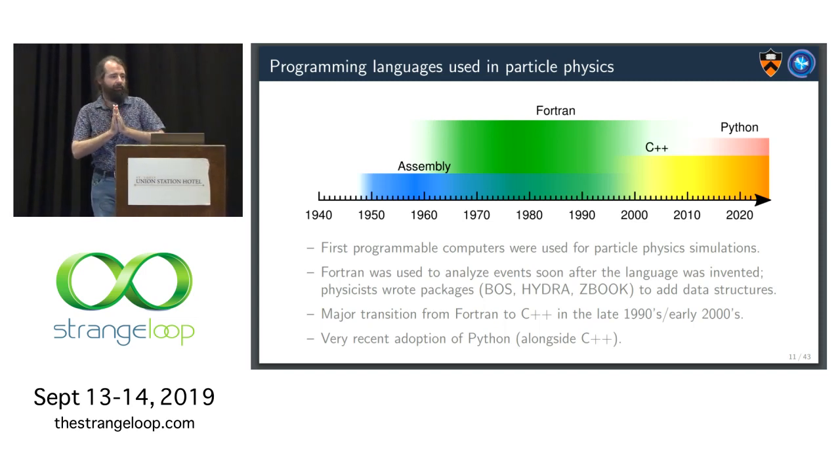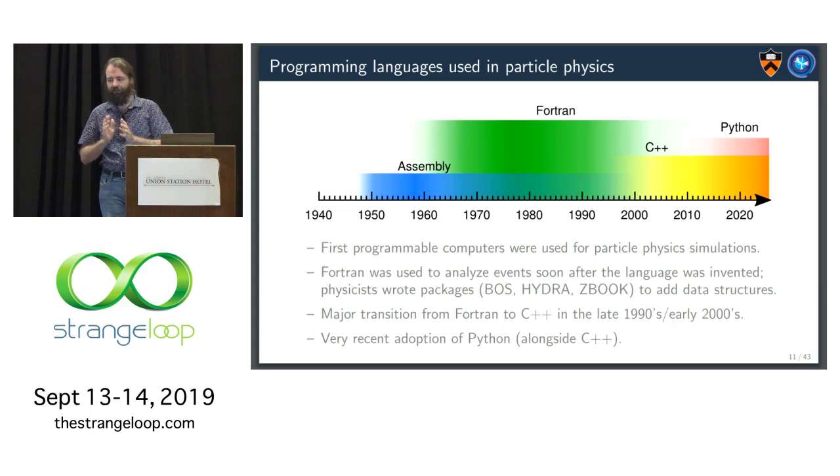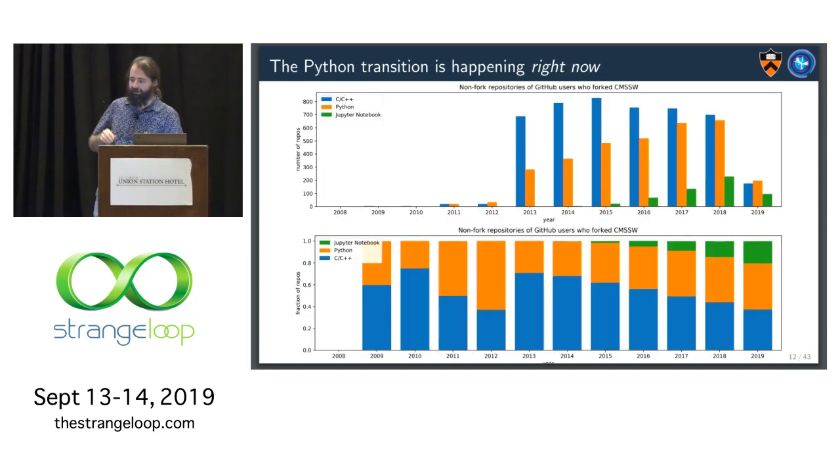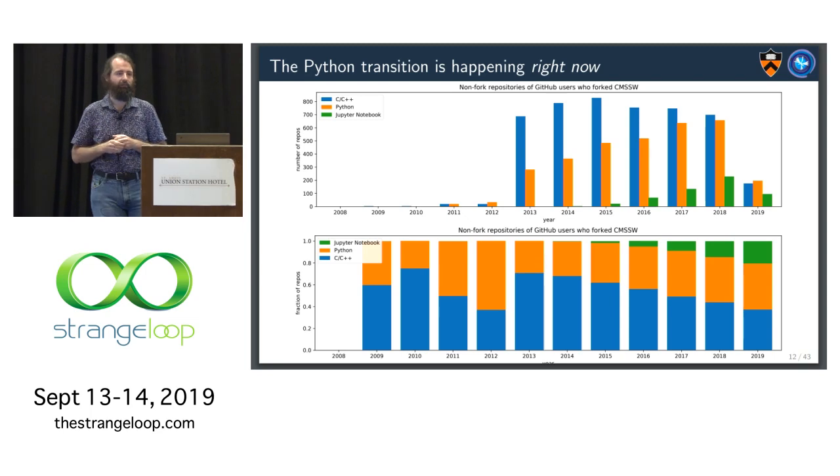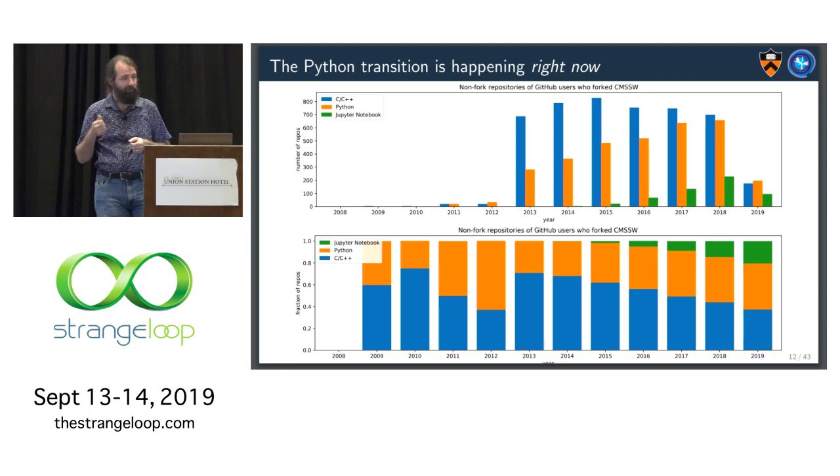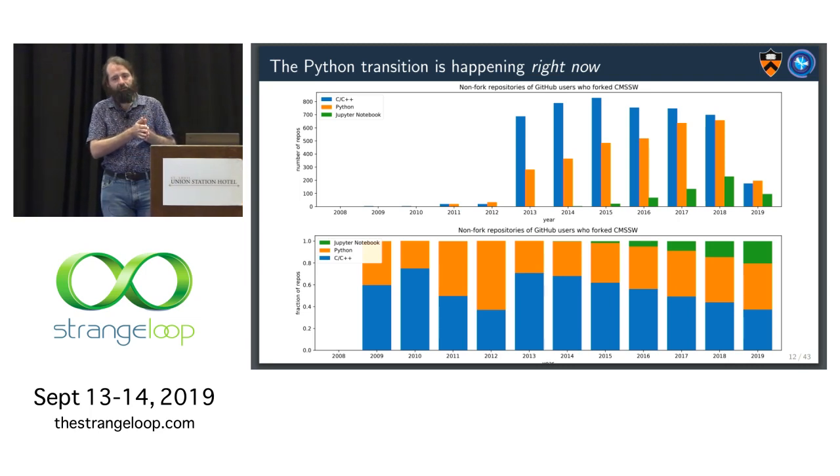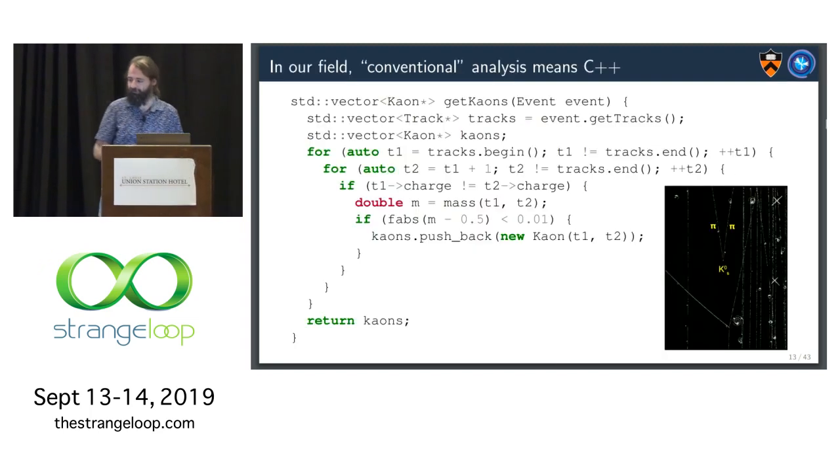And then the programming landscape is, I would say, rather conservative. It wasn't until the late 90s, early 2000s that we switched from Fortran to C++. And only right now that we are starting to use Python seriously. In fact, you can see this transition happening right now. I did some GitHub statistics. I selected users who are definitely physicists because they forked a particular repository. And then I looked at what are the languages of choice for their other repositories, the ones they didn't fork. And since physicists started using GitHub in 2013, to a large degree, it's slowly been transitioning from primarily C and C++ projects to now more Python and Jupyter. And this year is the turnover point.